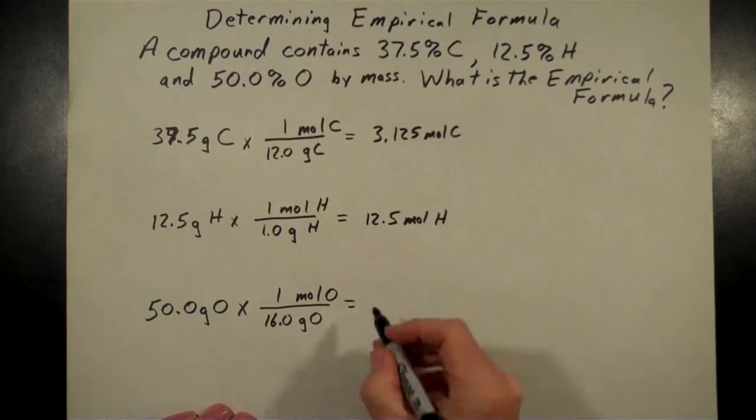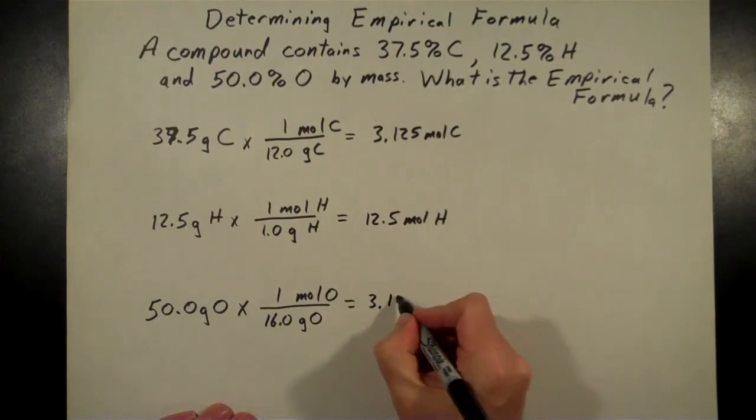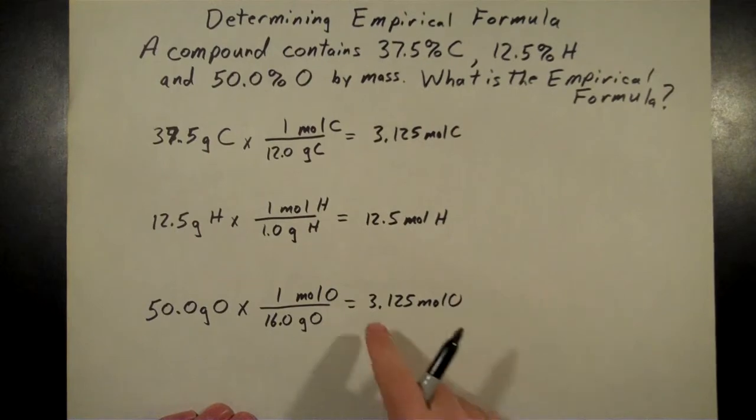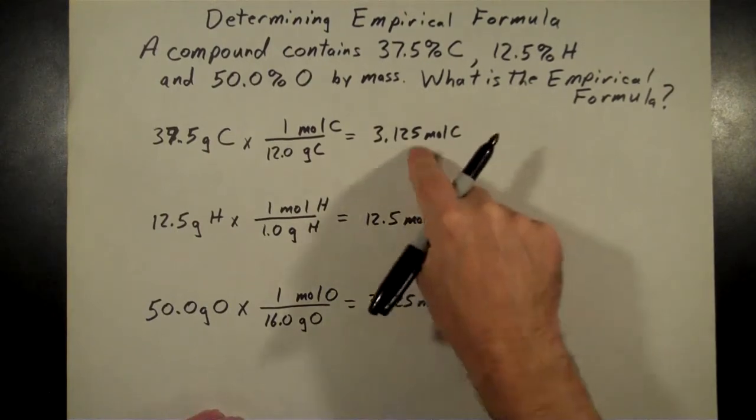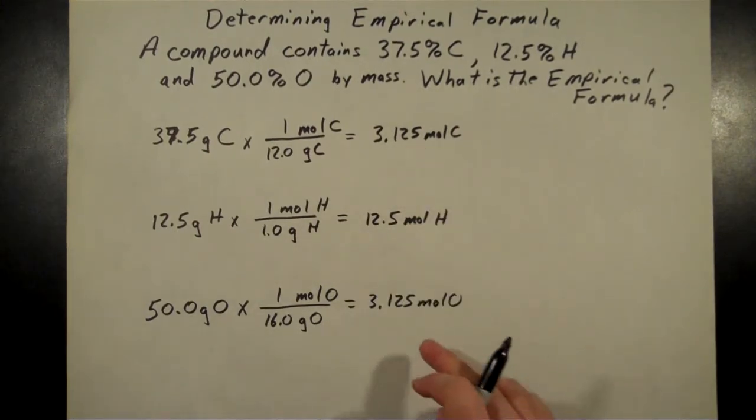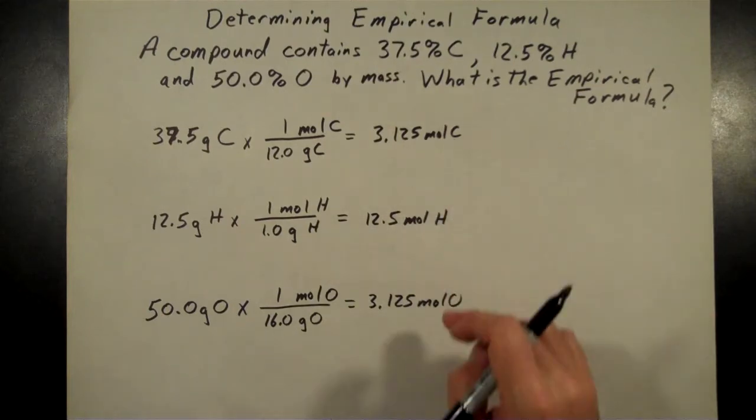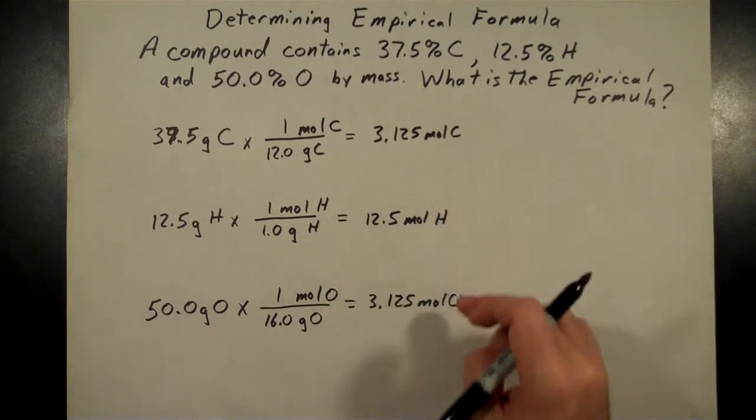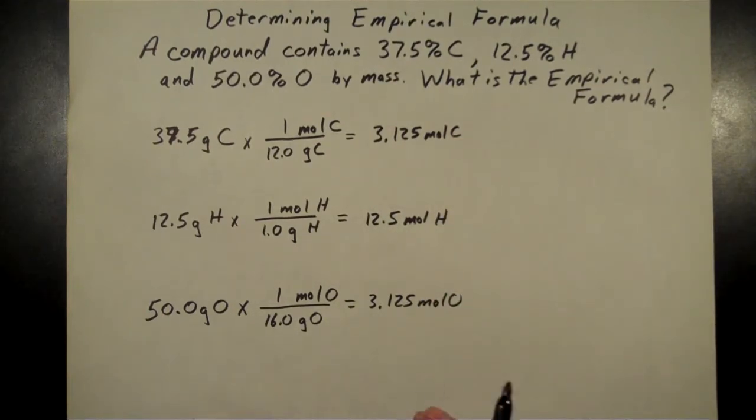And 50 divided by 16, you might notice something kind of strange here. We get 3.125 moles of oxygen, same number of moles of carbon. And what that tells us right off the bat is we've got the same number of atoms of carbon and oxygen in this sample.